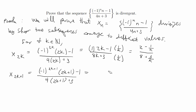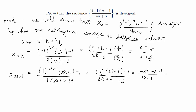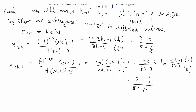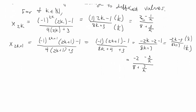For x of 2k plus one, this simplifies to negative one times 2k plus one minus one over eight k plus four plus three, which is negative two k over eight k plus seven. Multiplying top and bottom by one over k gives negative two minus three over k over eight plus seven over k. As you can see, we have different leading values — a negative two in one case and a two in the other — so these are going to converge pretty obviously to different numbers.